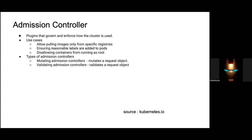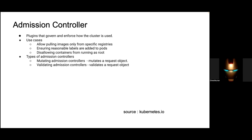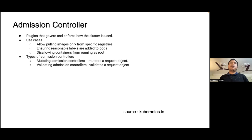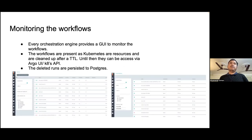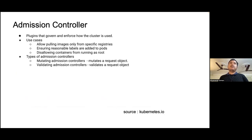From what I know, operators are defined for a specific resource — for example, deploying Keycloak or Elasticsearch — that's where operators come in. Argo itself is actually a Kubernetes operator. But what admission controllers do is intercept requests going to the API server — that's the key difference.